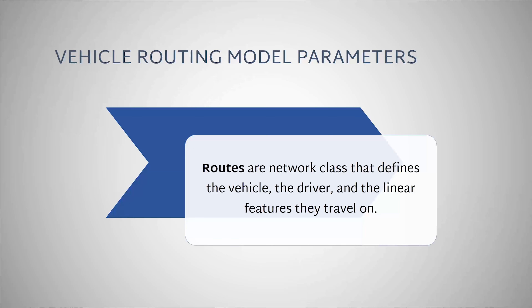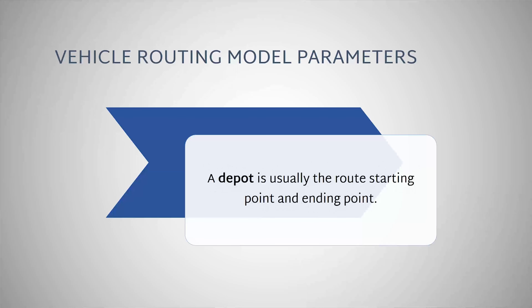A depot is usually the route's starting point and ending point. It can also represent a place where the route renews itself by unloading or reloading cargo before continuing on to the next order. Depots can have attributes that determine when the route is allowed to begin, when it must end, how long it takes to unload and reload cargo, and how long it takes to service the vehicle between orders.